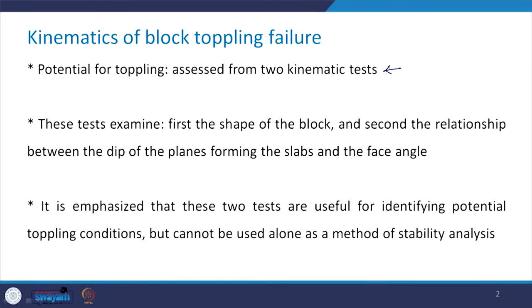The potential of toppling is being assessed from two kinematic tests. These tests examine first the shape of the block, and second the relationship between dip of the planes forming the slabs and the face angle. If you recall, we had discussed this kinematic analysis for plane as well as wedge failure when we were discussing about the graphical representation of geological data and its application. At that time, we did not discuss the kinematics of the block toppling failure.